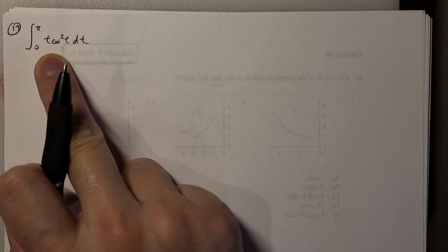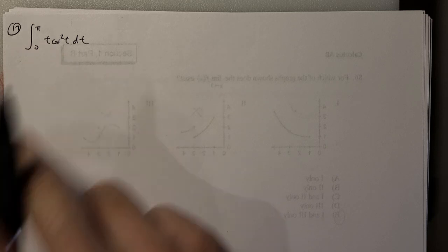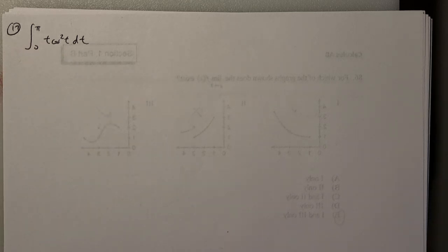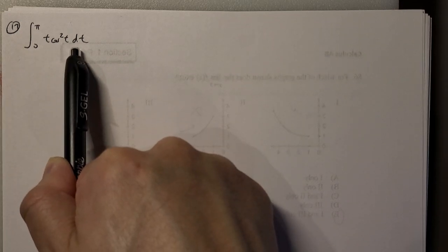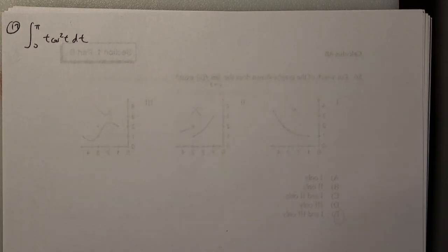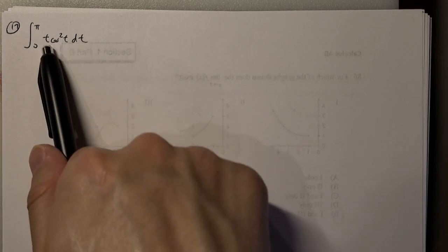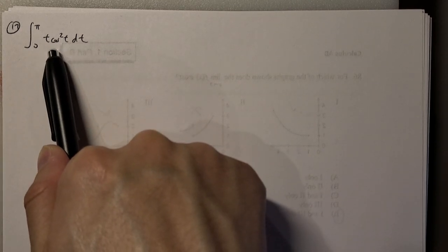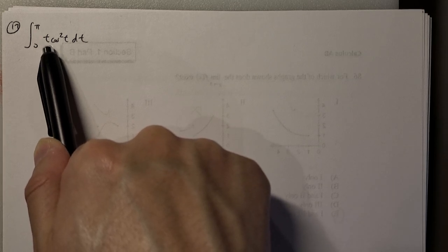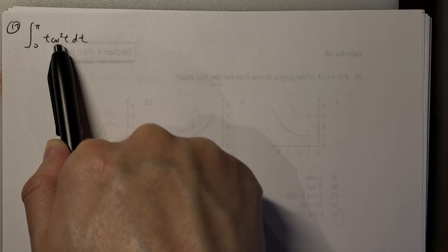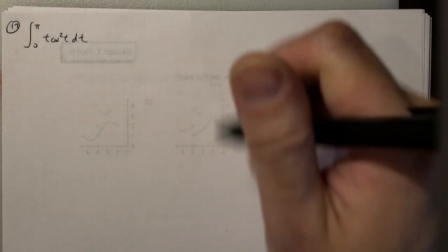We have this integral from 0 to π of t·cos²(t) dt. I know that if it's just t·cos(t) dt, it's integration by parts. Do I want to use integration by parts to solve this? It might be doable if we let u be t and dv be cos²(t), because we know how to find the integral of cos²(t) to get our v. So let's do integration by parts.